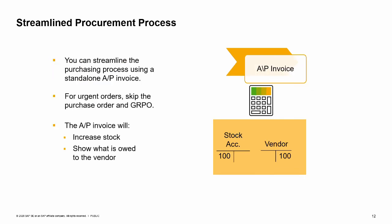Sometimes, you may need to streamline or simplify the purchasing process to make it more efficient. Perhaps you need to get an item immediately, so you call the vendor and ask them to deliver the item today. Because of the hurry, you skip the purchase order. When the item is delivered, the vendor invoice is also delivered.